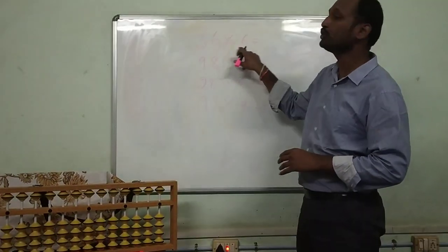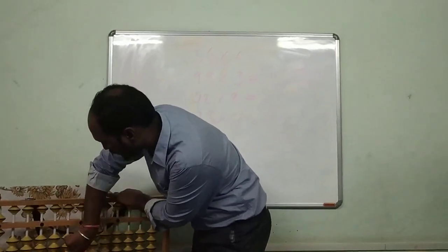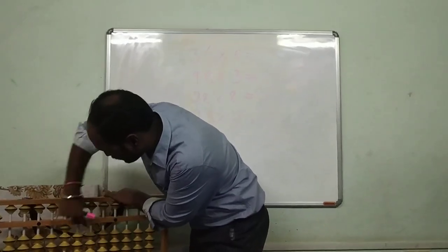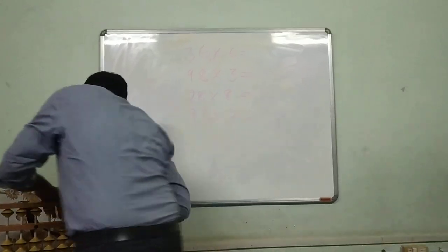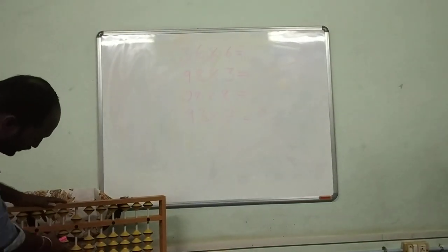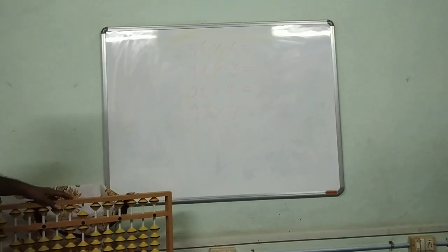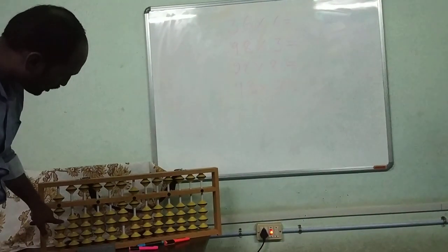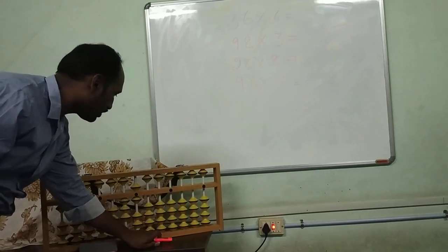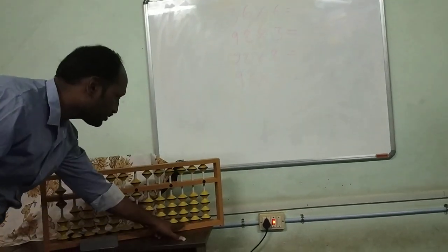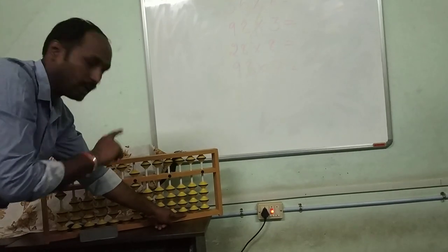Thirty-six into six. I am taking six and thirty-six. Six and thirty-six — means I am going to multiply. Three digits means I use three rows: one, two, three. I am keeping my finger on top of it. Then first of all I am going with six threes up.